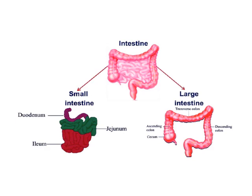In the small intestine, digested materials are absorbed. For easy absorption, the small intestine bears many finger-like projections known as villi. Villi are made up of brush-border epithelium, which increases the absorption rate many times over. After absorption, undigested material is passed to the large intestine, then transported to the rectum, and finally excreted out of the body through the anus. That's all about digestion.